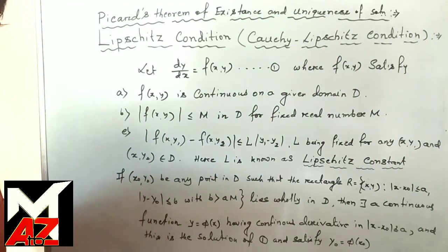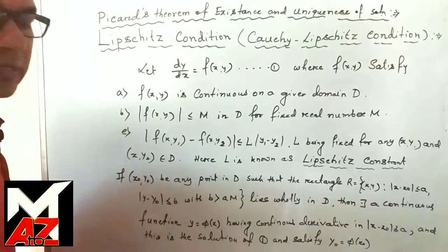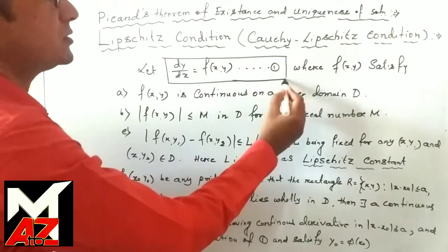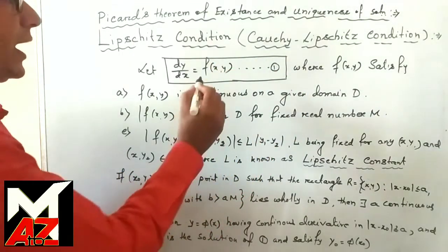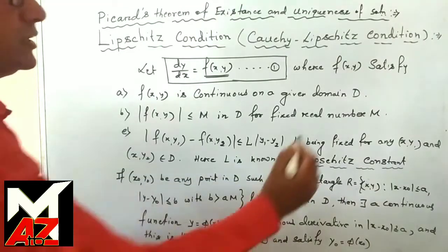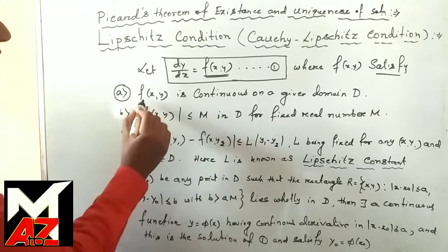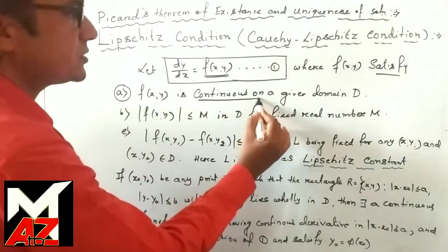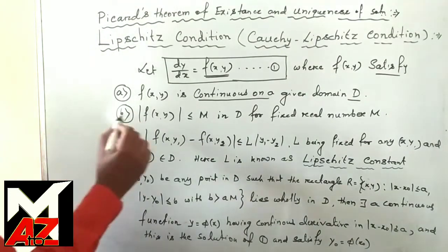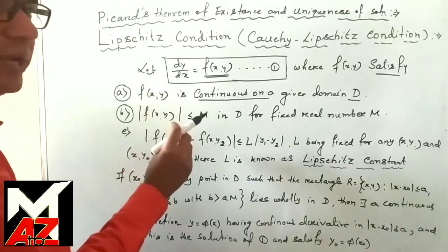What is the Lipschitz condition? Let dy/dx = f(x,y) be a first order ordinary differential equation — equation (1). Here the function f(x,y) satisfies the following three conditions. Condition 1: f(x,y) is continuous on a given domain D. Condition 2: |f(x,y)| ≤ M in D, that is, f(x,y) is bounded in D.